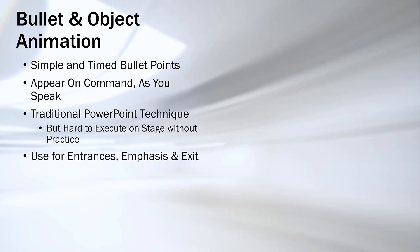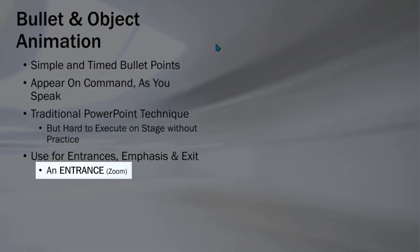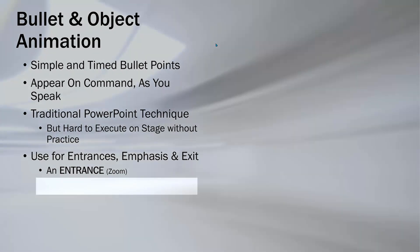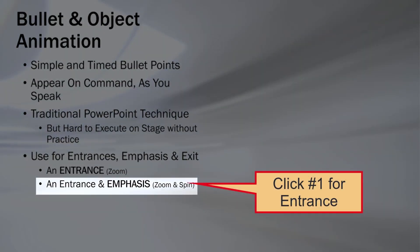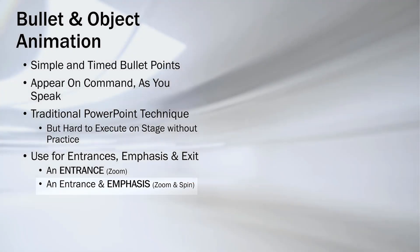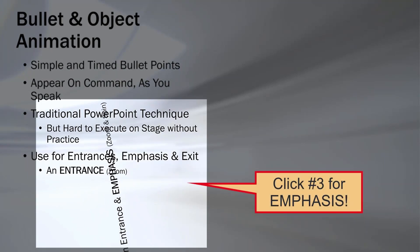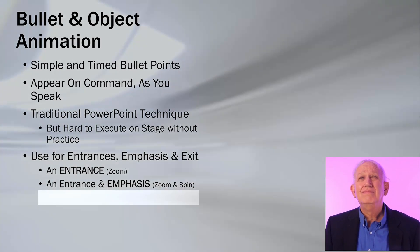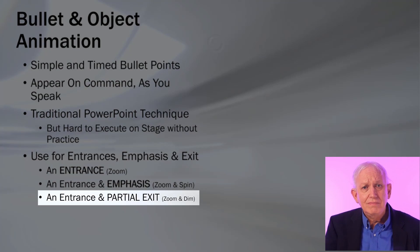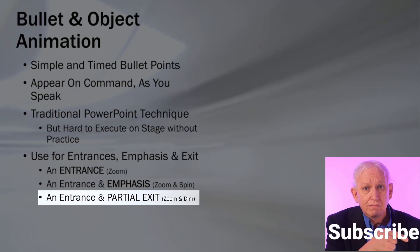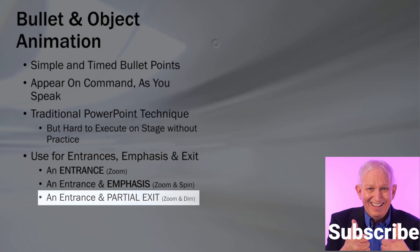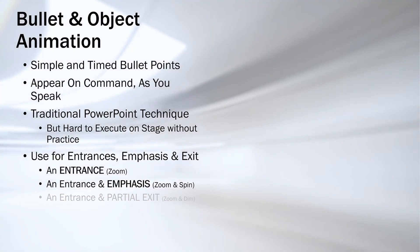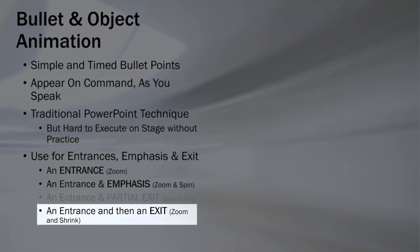Most people are familiar with standard entrance animations such as the zoom effect, but you can stack them together with an entrance animation, and then on the second click add an emphasis such as the spin move — which in a professional presentation is a bit over the top, but there are many other more classy emphasis animations. Lastly, there is the exit animation, which may not be a full exit; here the action just changes the font color to indicate the topic has been covered. But if you want, you can add a second exit that will have the bullet item leave the slide.